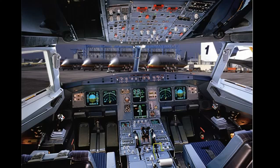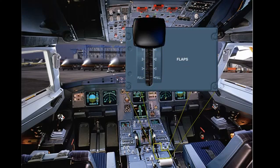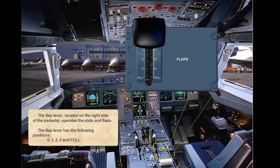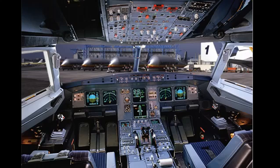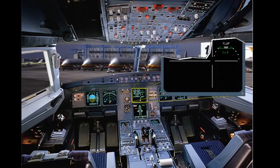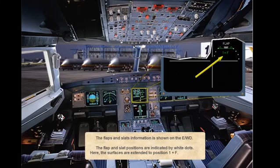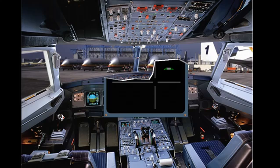The flap lever, located on the right side of the pedestal, operates the slats and flaps. The flap lever has the following positions: 0, 1, 2, 3, and 4. The flaps and slats information is shown on the engine warning display. The flap and slat positions are indicated by white dots. Here the surfaces are extended to position 1 plus F. This is the flap 0 indication — notice there is no labelling with this setting.